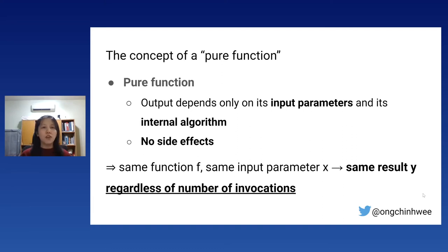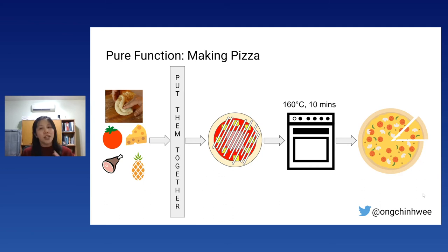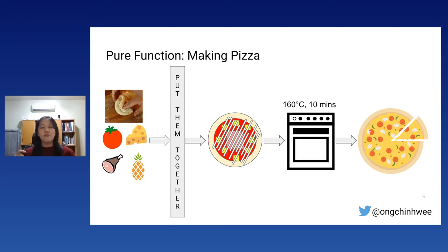A pure function is one where the output depends only on the input and the internal algorithm — nothing else — and it must not have any side effects. The key implication is that with the same function and the same input x, we always get the same result regardless of the number of invocations. As an example: making pizza with dough, tomatoes, and pineapples, with a set temperature and time, should ideally always produce a nicely cooked pizza — that's a pure function conceptually.